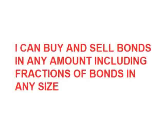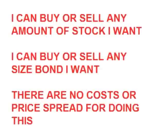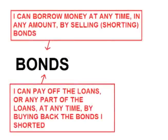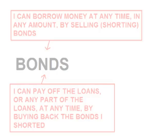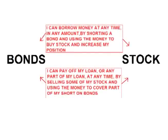This broker also lets you do the same thing with bonds — buy or sell bonds, even fractions of whole bonds in any amount. Furthermore, this broker does not charge commissions and there is no price spread. You can borrow money by selling bonds and pay the loans off by buying the bonds back, then use this borrowed money to buy stock. You can freely borrow money to buy stock at any time, in any amount, by shorting bonds, and pay back the loan at any time by selling some stock and covering the shorts on the bonds.